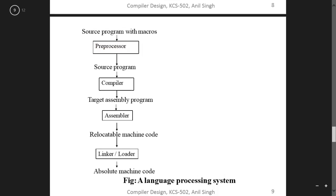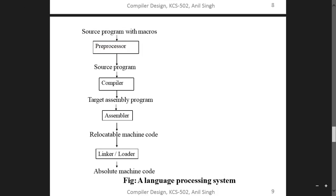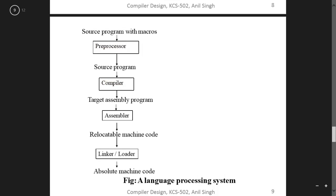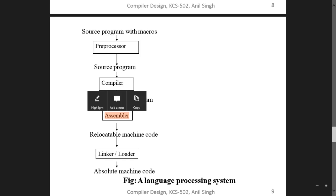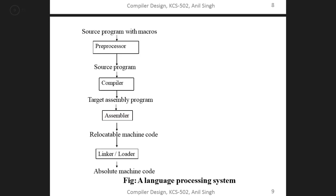Now let's see the diagram. First, we have the source program. The source program is fed through the pre-processor using macros such as include stdio. Then it goes to the compiler, which converts to assembly language — the target assembly. Then through the assembler, we get relocatable machine code. Then through the linker and loader — the linker links files, the loader loads the executable files — we get absolute machine code.